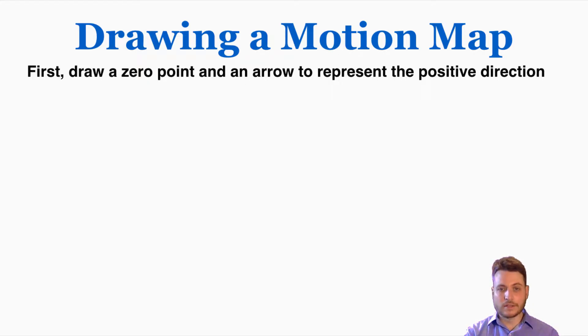On the motion map, it's going to look something like this. We're going to draw a point and say that this is the zero point and then draw an arrow coming out of it and indicate that that is the positive direction. So if an object is moving in the opposite direction of the arrow, it's moving in the negative direction. So I can now give you an example of drawing a motion map itself.